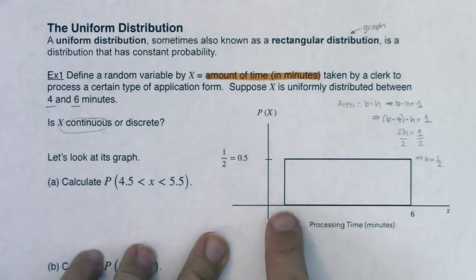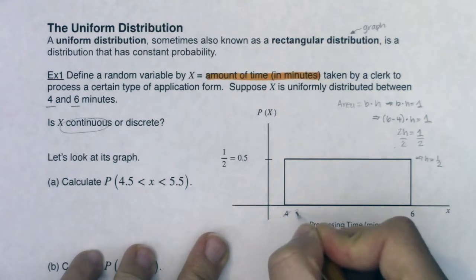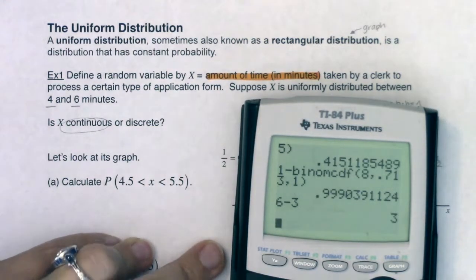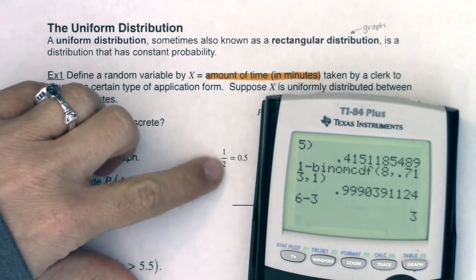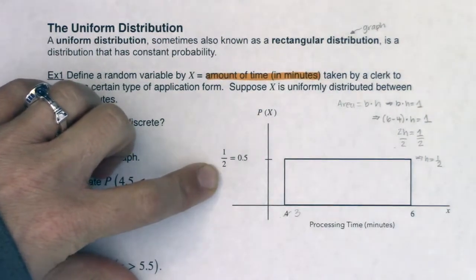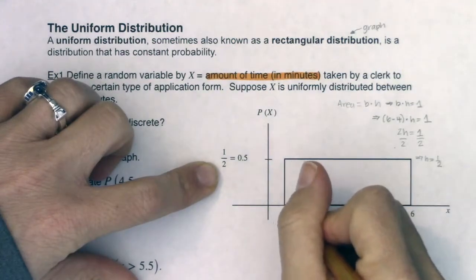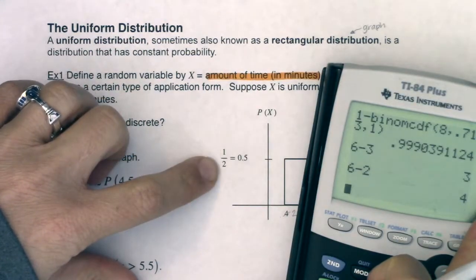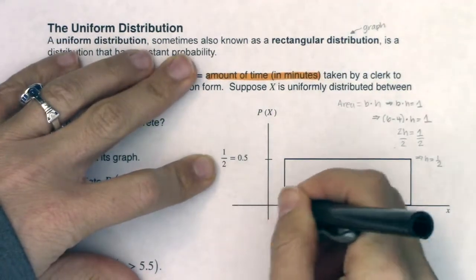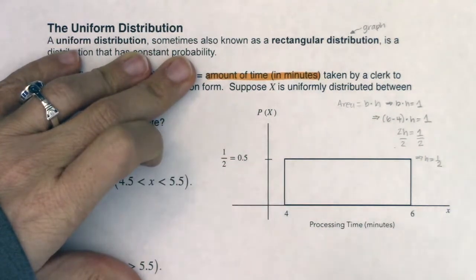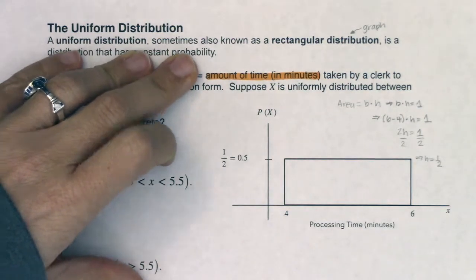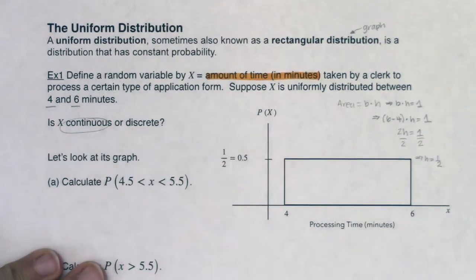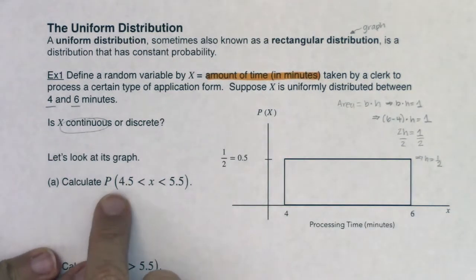To illustrate: if the spread were 3 to 6 instead, the base would be 6 minus 3 equals 3, so the height would be one-third - always the reciprocal. If the spread were 2 to 6, the base would be 4, so the height would be one-fourth. Whatever your base is - found by calculating the range, high minus low - do its reciprocal for the height. That's how you find the height of any uniform distribution. So with 6 minus 4 equaling 2, the reciprocal is one-half - that's our uniform height.